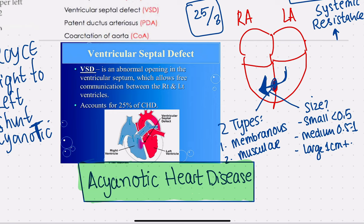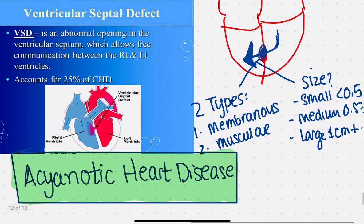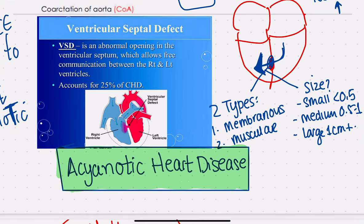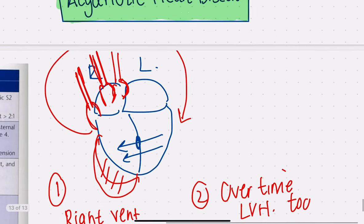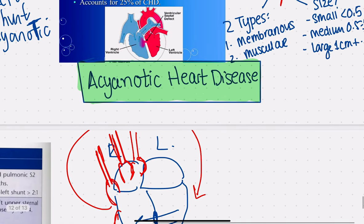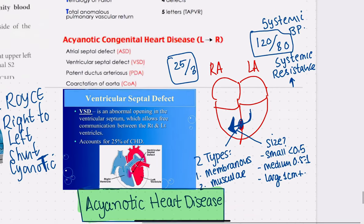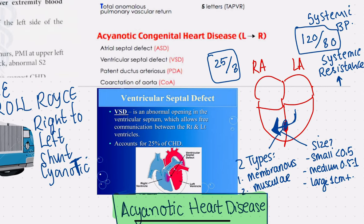A VSD is a left-to-right shunt because you have a higher blood pressure on the left side. The systemic blood pressure in the left side of the heart is 120 over 80, whereas the pulmonary blood pressure is 25 over 8 — 25 in systole and 8 in diastole. That's a much higher pressure on the left side.